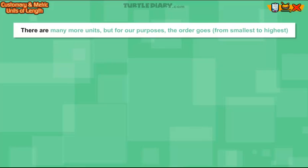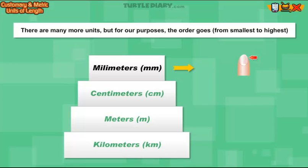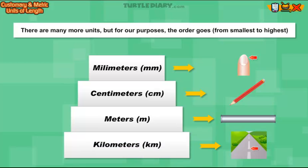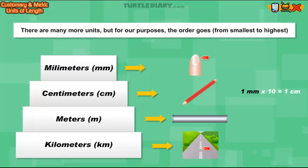There are many more units, but for our purposes, the order goes from smallest to highest: Millimeters, Centimeters, Meters, Kilometers. One millimeter times 10 equals 1 centimeter.